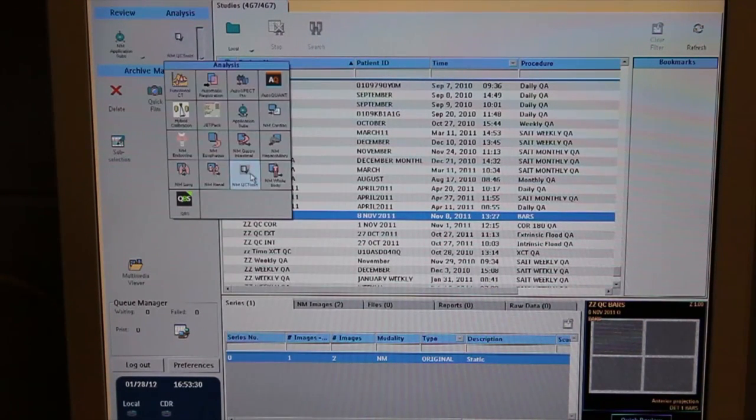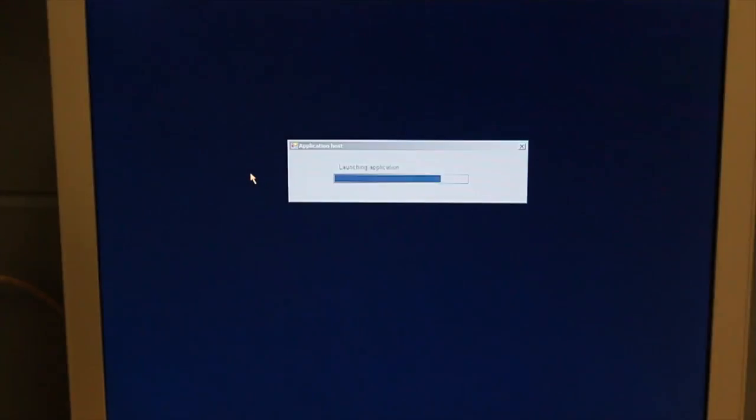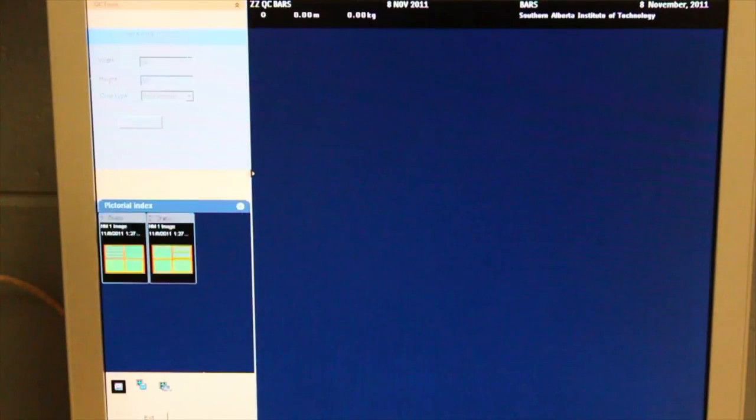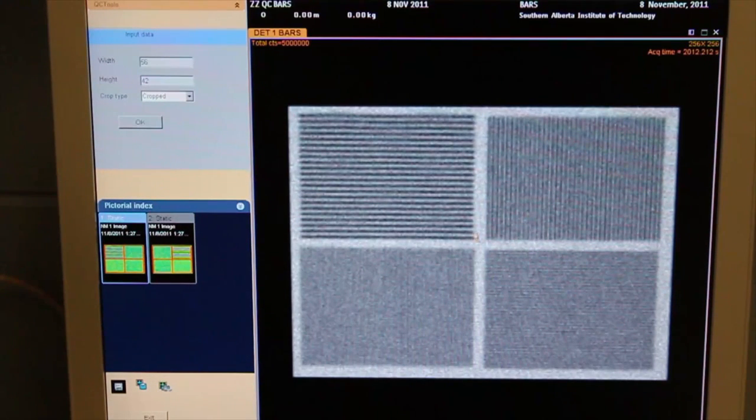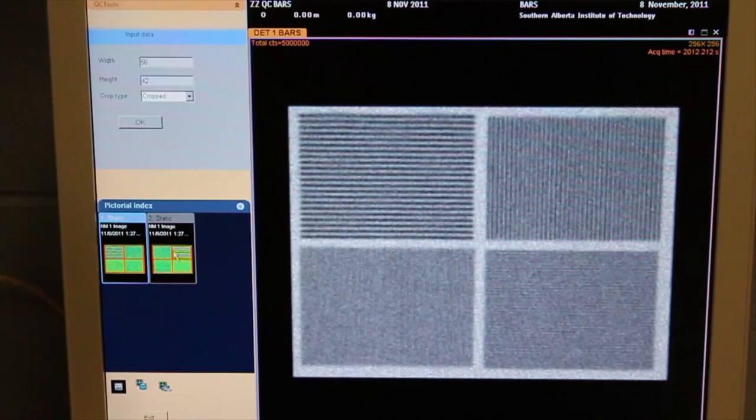The analysis for this test is done qualitatively only. Enter the QC tools from the analysis menu. Select detector one, display the image. Identify the quadrants and the degree of visualization of the bars. And repeat the same for detector two. These images would be compared to previous and saved on a disk on a weekly basis.